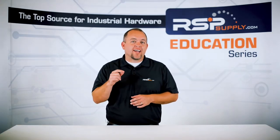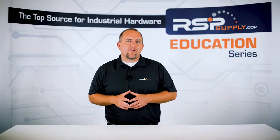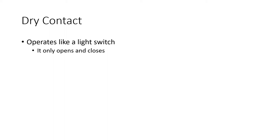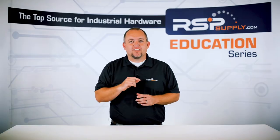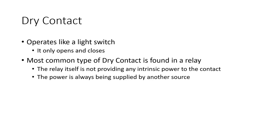Let's first start with the dry contact, as it is probably the more referenced type of contact out of the two. The easiest way to think of a dry contact is to think of a light switch. The switch itself does nothing except open and close. When the switch is closed, power that is being supplied by another source can flow through it. When the switch is open, power is interrupted and can no longer flow. This is the only purpose of the switch — this, in essence, is a dry contact.